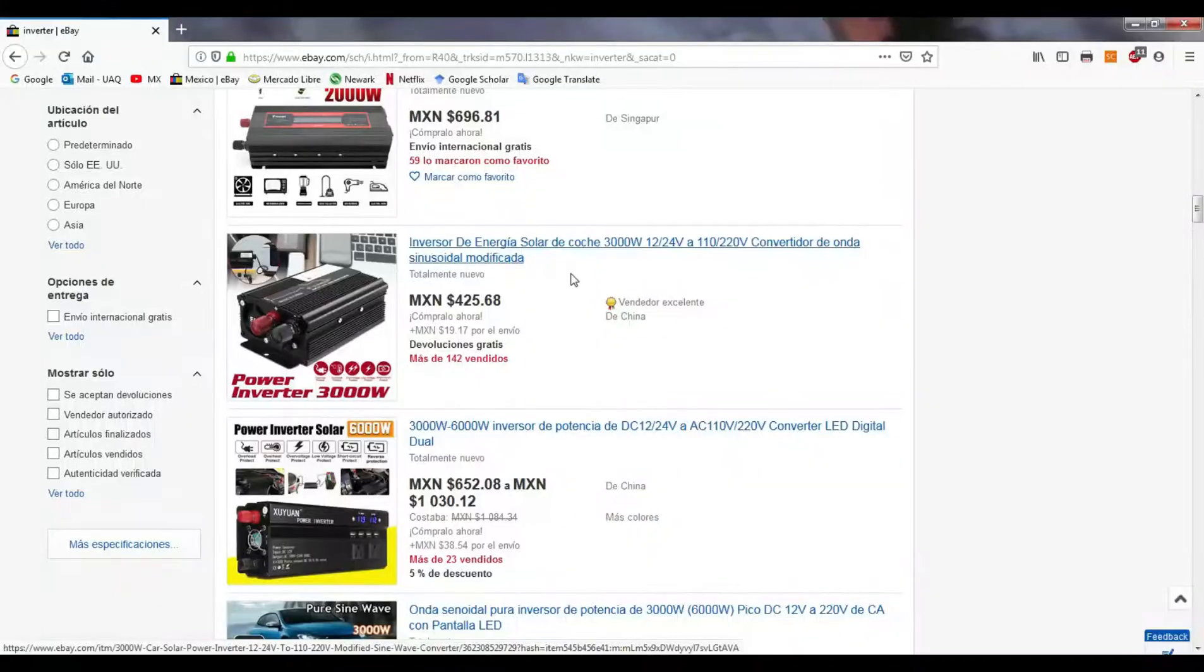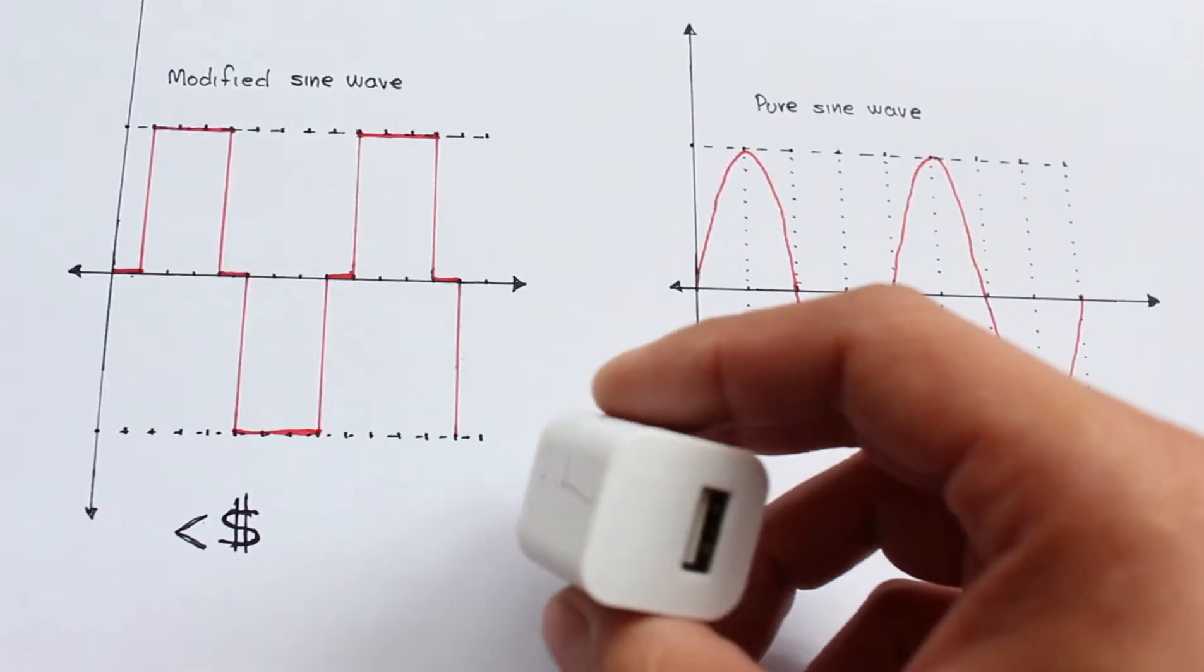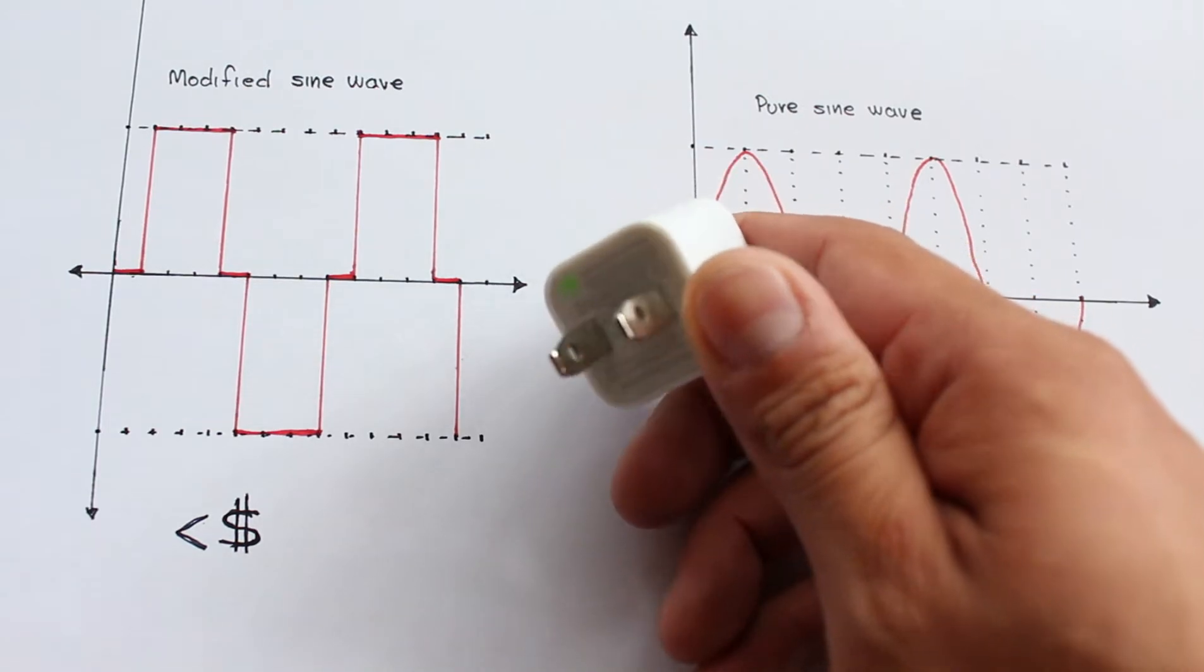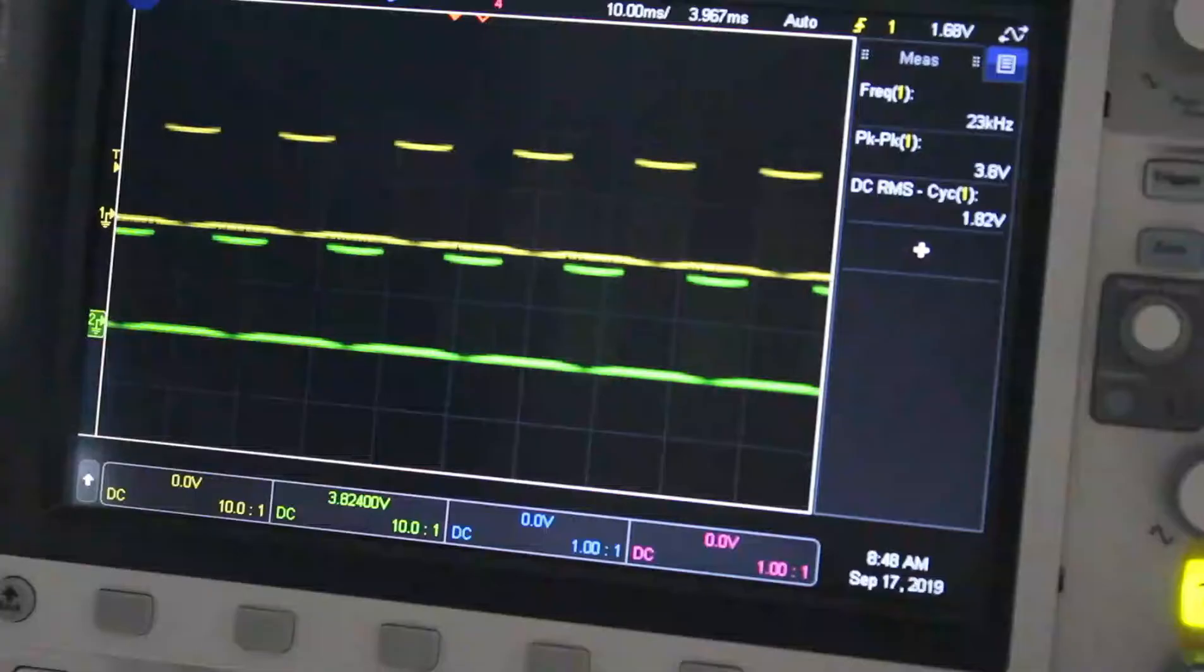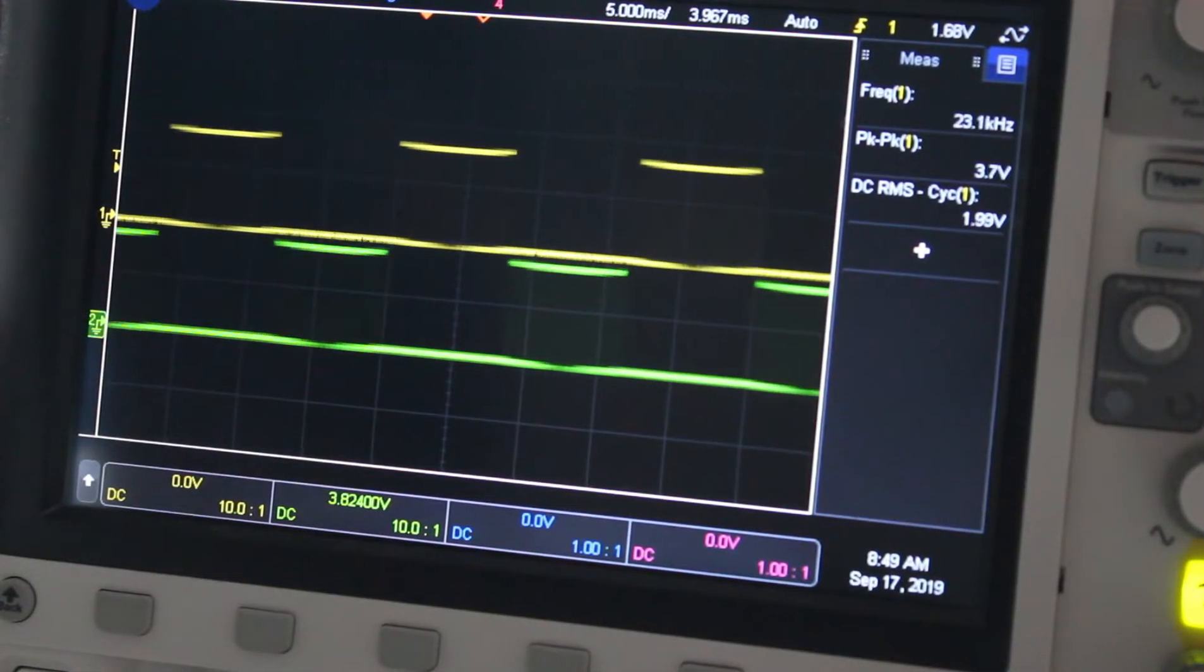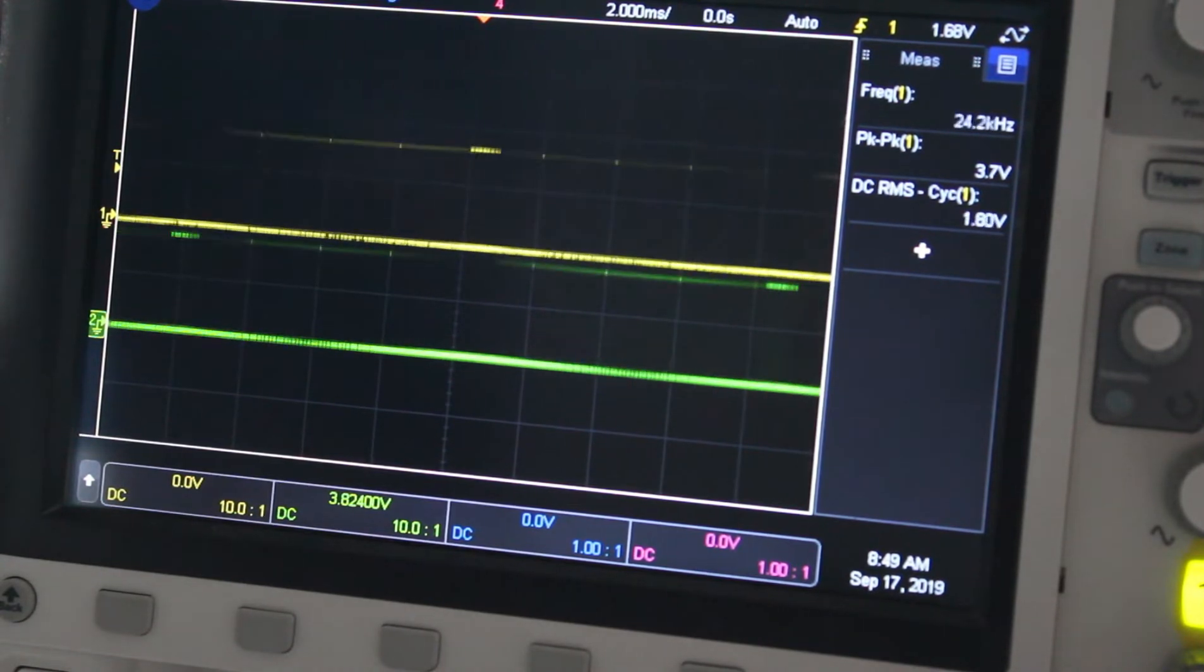The first one is cheaper, however, it's not suitable for some home appliances like phone chargers or puffy machines. On the other hand, a pure sine wave requires a more sophisticated commutation process.